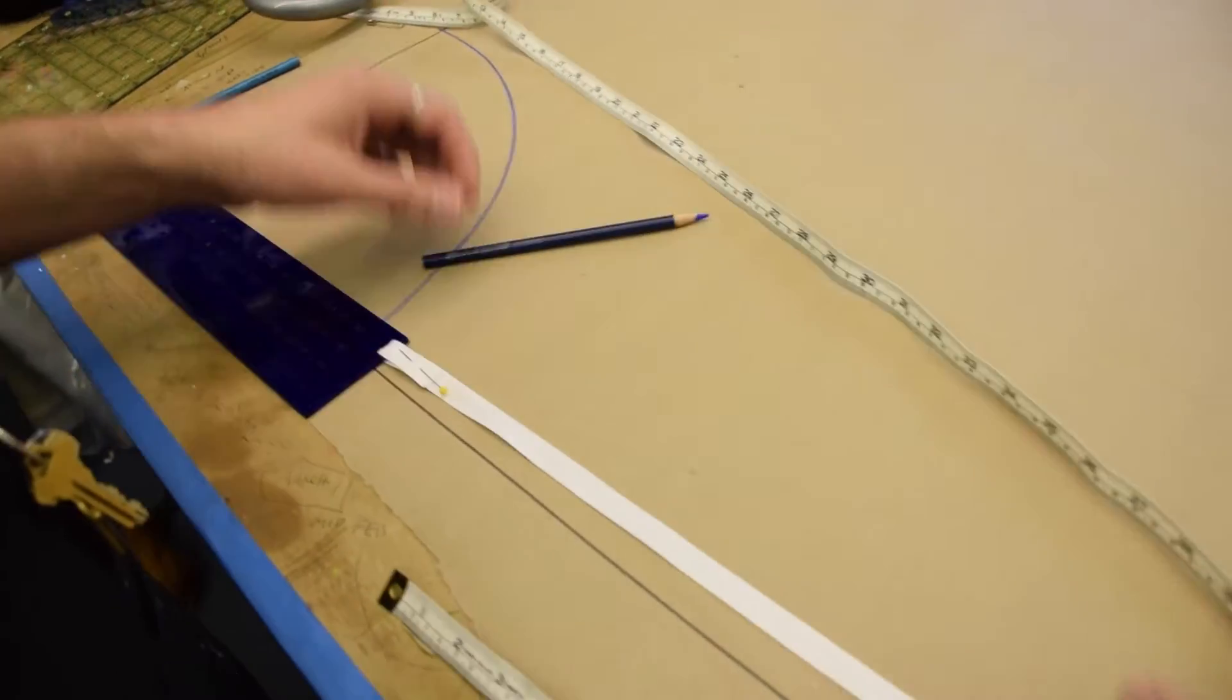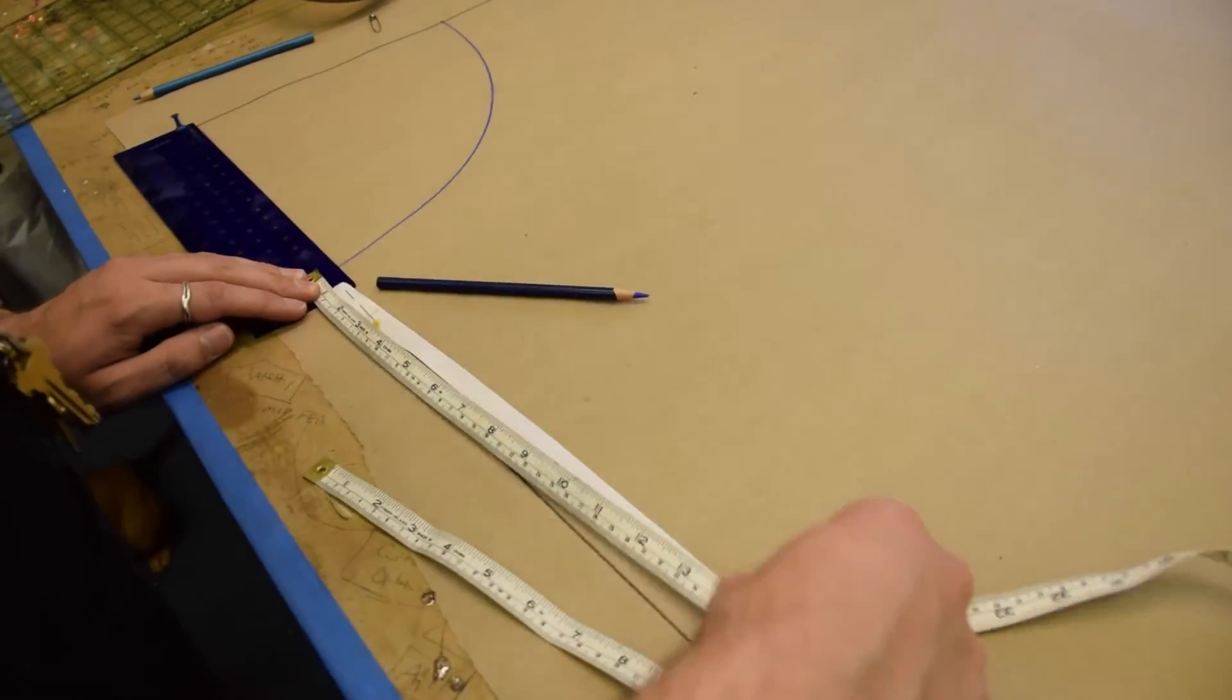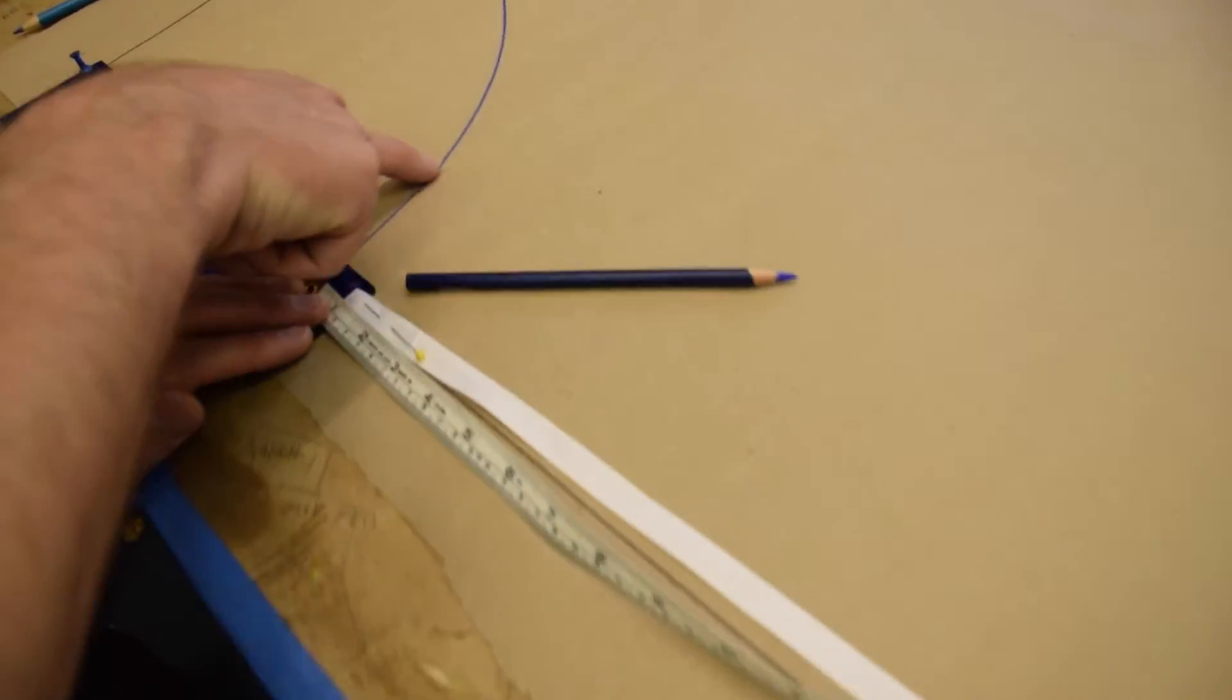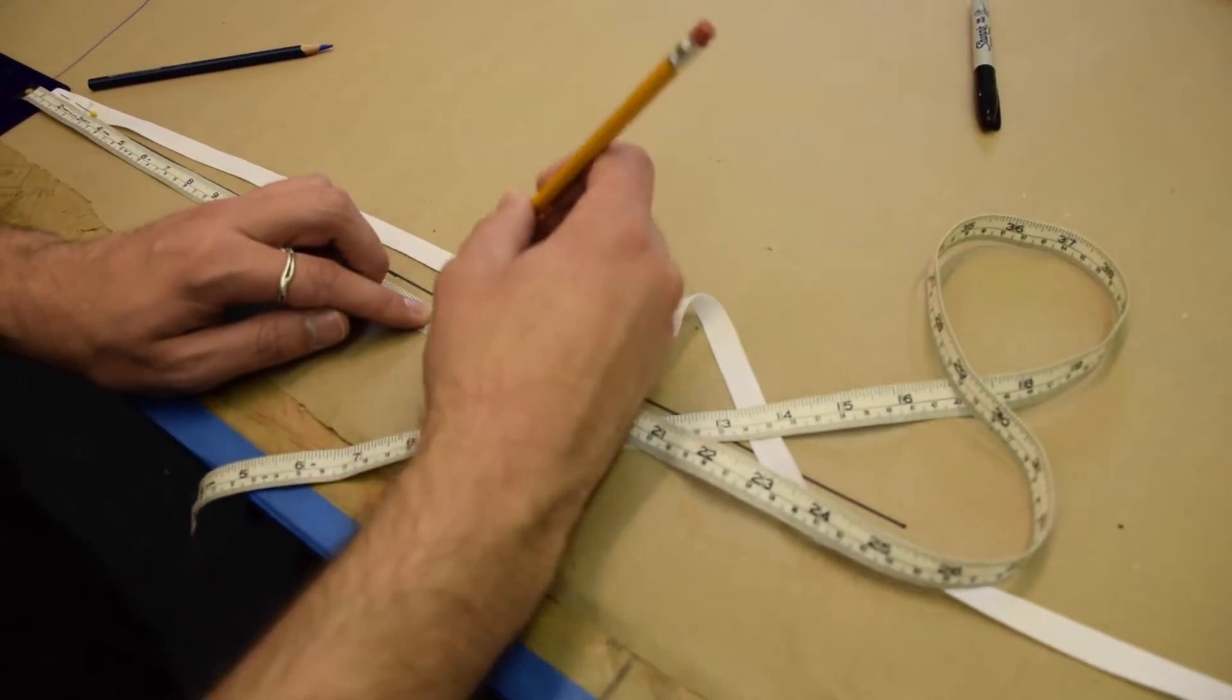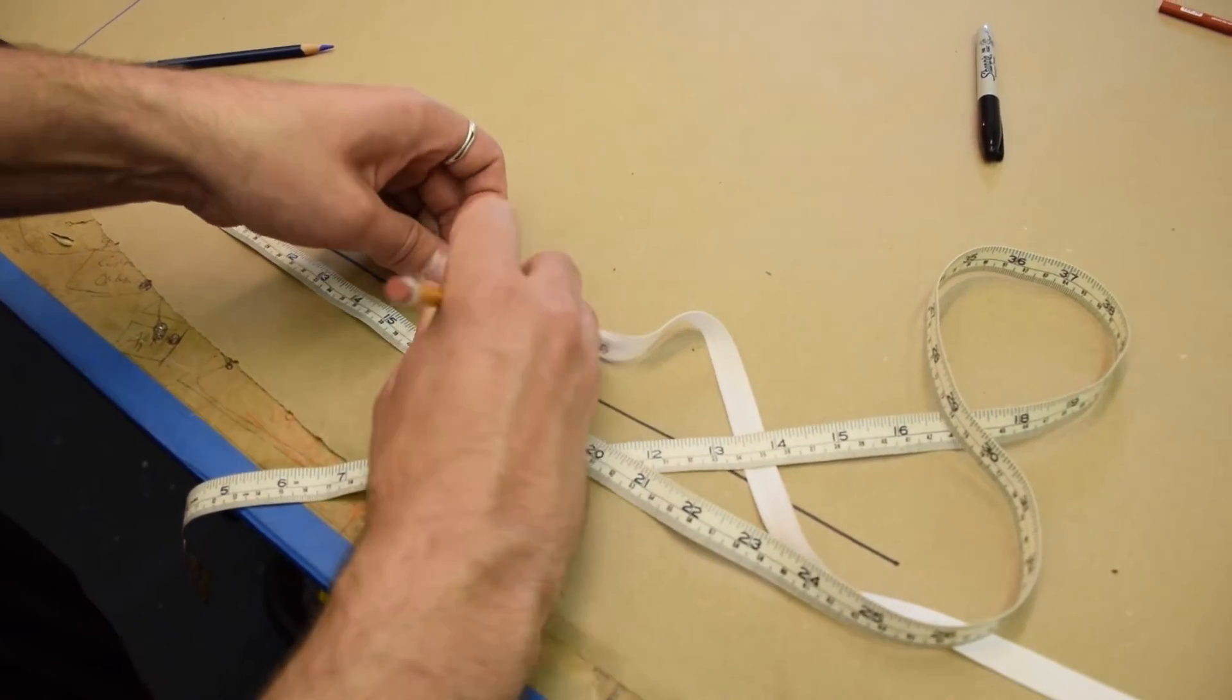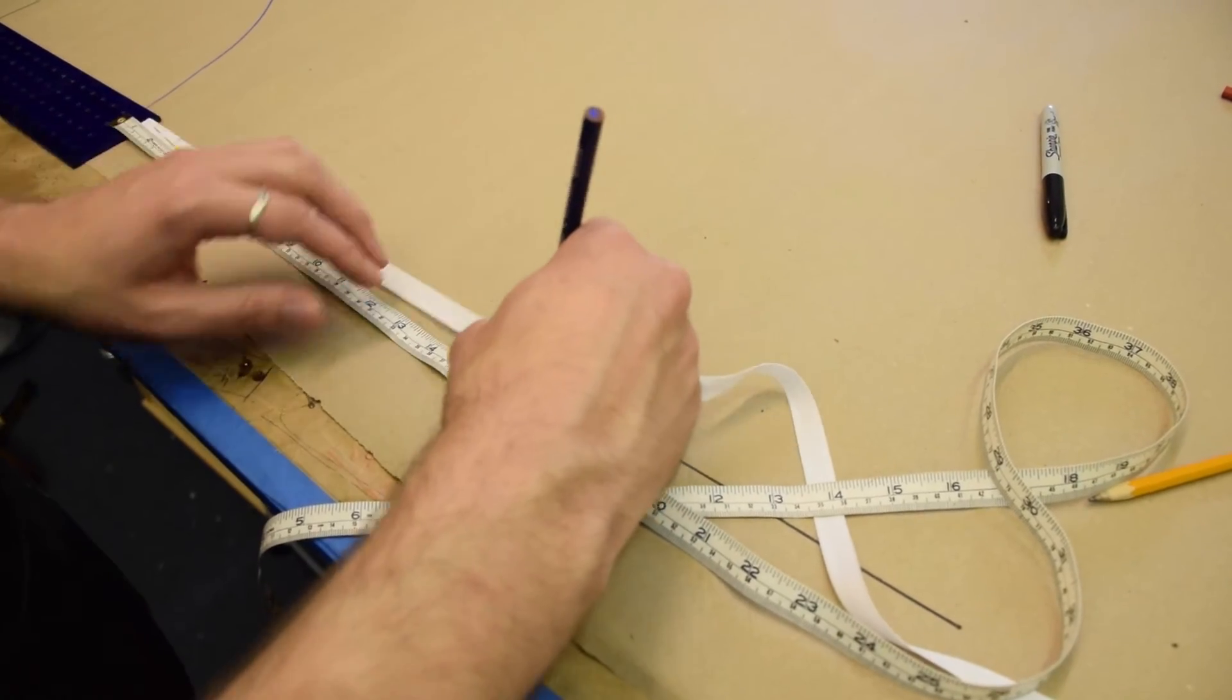And we're going to make this now with a 16-inch hem. So from my waist, or my high hip actually, we're going to measure 16 inches down the tape and poke a hole. And then we're going to put our pencil at 16 inches.